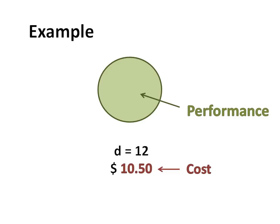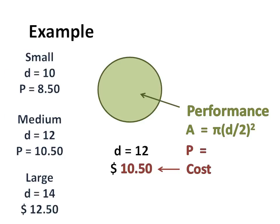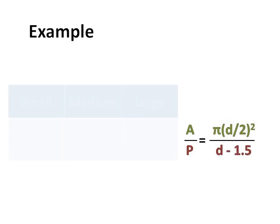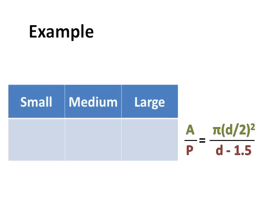So the cost performance is the area divided by the price. The area A is pi times the radius squared. And the price P is, well, let's say there's a pattern: P is the diameter minus 1.5, right? If you know only arithmetic, you can simply draw a table with 3 columns for small, medium and large, and calculate for each one the value A over P. You get 9.2, 10.8 and 12.3. So the pizza with the maximum cost performance is a large one.